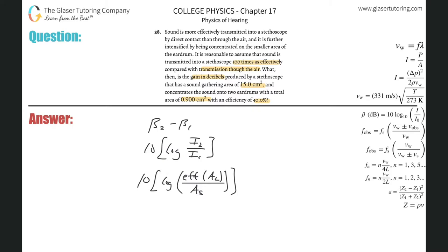Now this is talking about stethoscope compared to air, meaning stethoscope transmitting sound through that stethoscope instead of through air. So the one thing I have to tweak here is the efficiency term, meaning there's really two values that are going to enter into this efficiency. One is that the stethoscope is 100 times more effective, and then also the efficiency is 40% of the original.